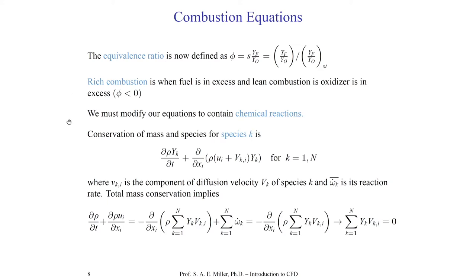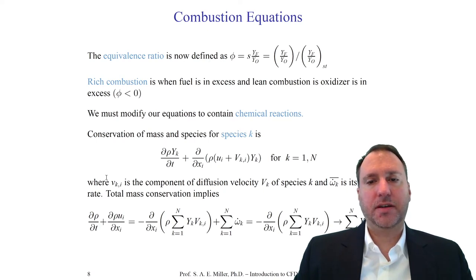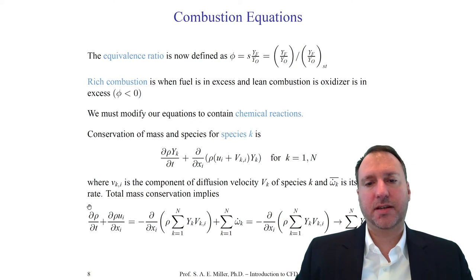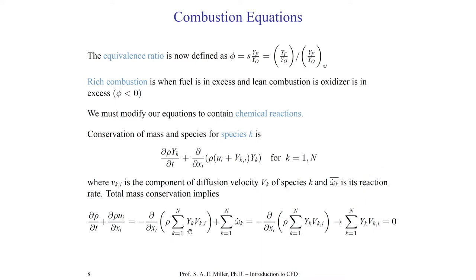Now we'll need to modify our equations to contain the effect of chemical reactions. For the Navier-Stokes conservation of mass, it's now written such that we have the density times the mass fraction of species k — giving us n conservation of mass equations. We can also modify the Navier-Stokes equations to account for mass fractions and diffusion velocity of v sub k. Each species k has its own diffusion velocity and its own particular reaction rate. Omega dot sub k is the reaction rate of species k, found in the momentum part of the equations.